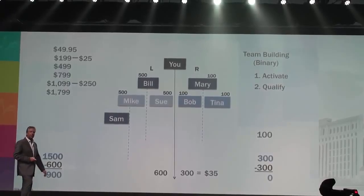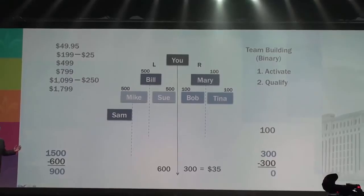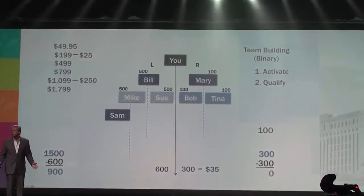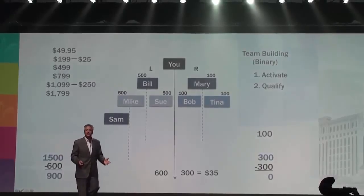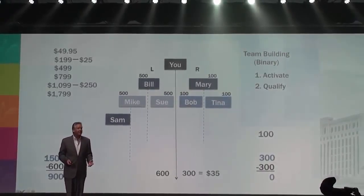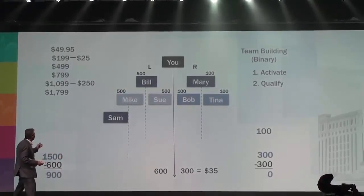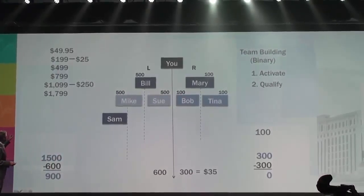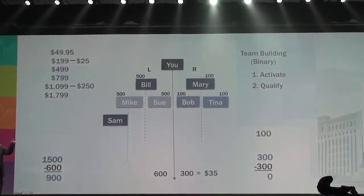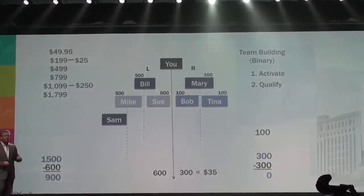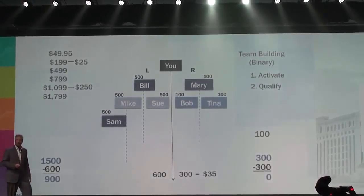Sam looks over and orders the $1,099 package. Why? Because everybody else on the team is doing it. He knows he needs inventory to blow out his area. He comes in and orders the $1,099 package. You brought Sam here — how much money did you get up front? $250, and 500 points goes into the plan. So is everybody seeing how this works?